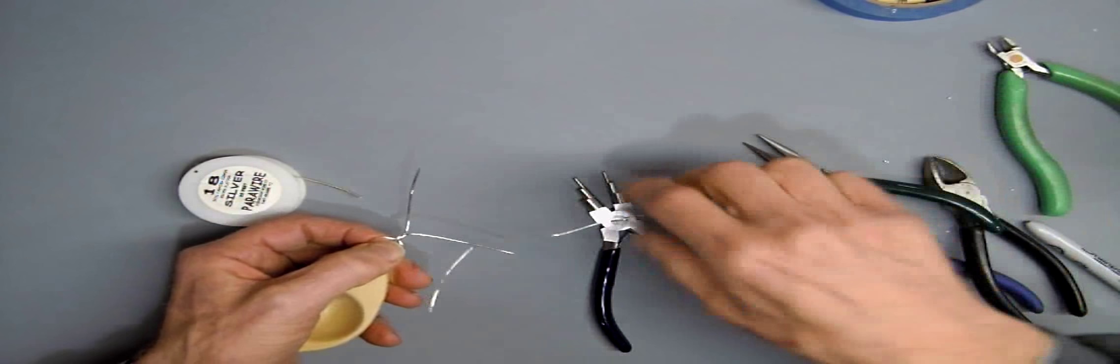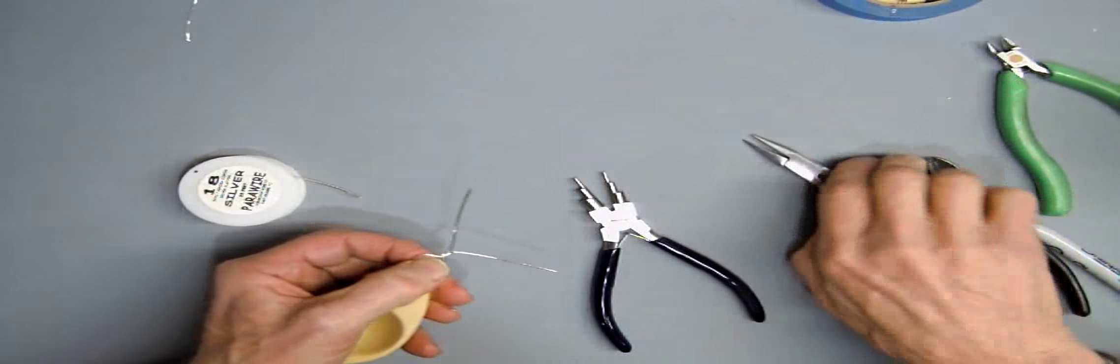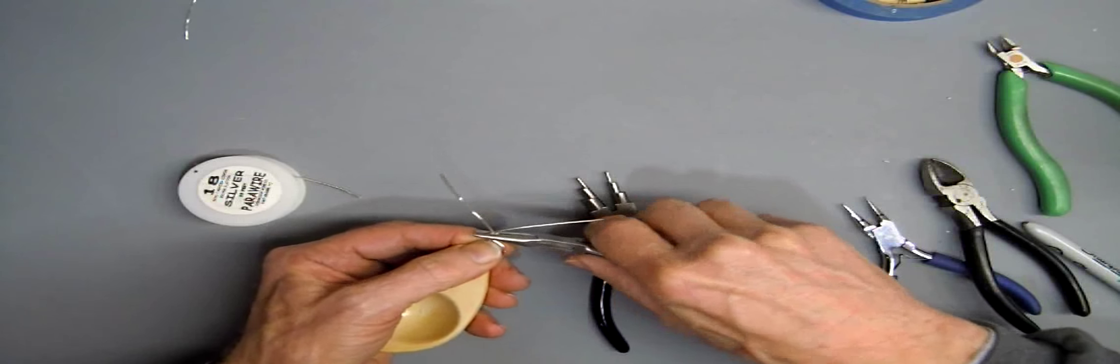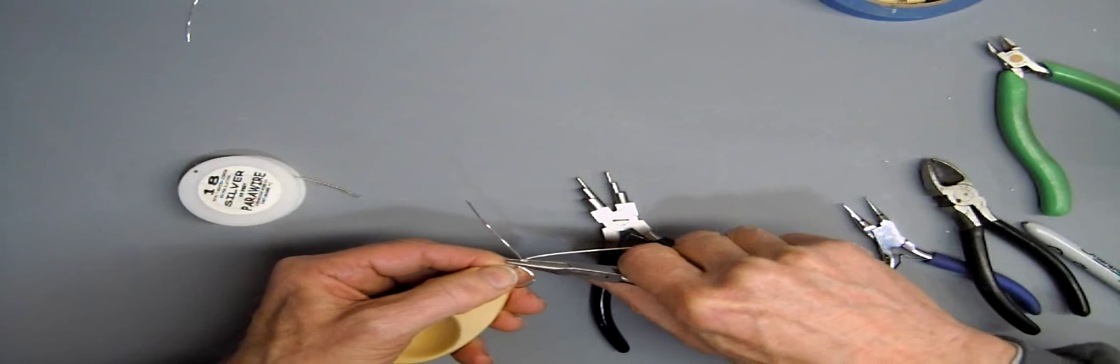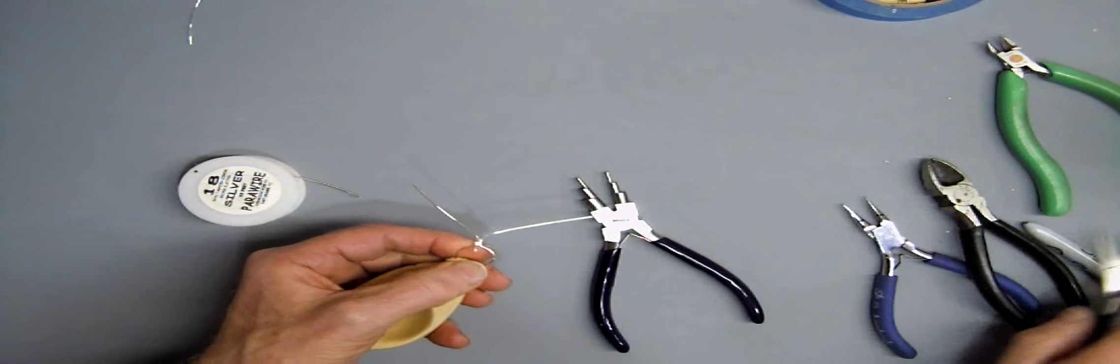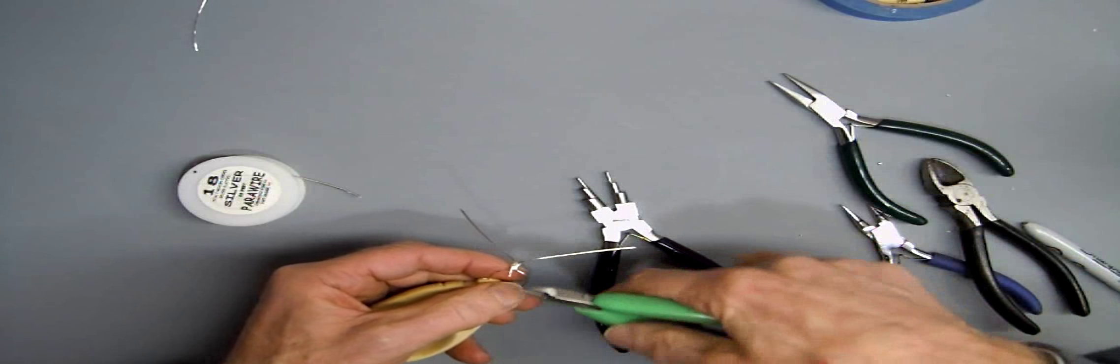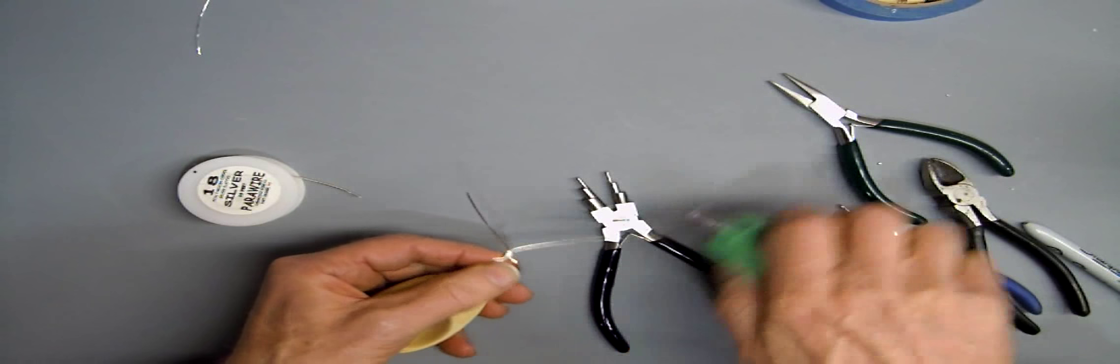I'm going to crush the wound section with the flat pliers to flatten it out and cut off the starting wire.